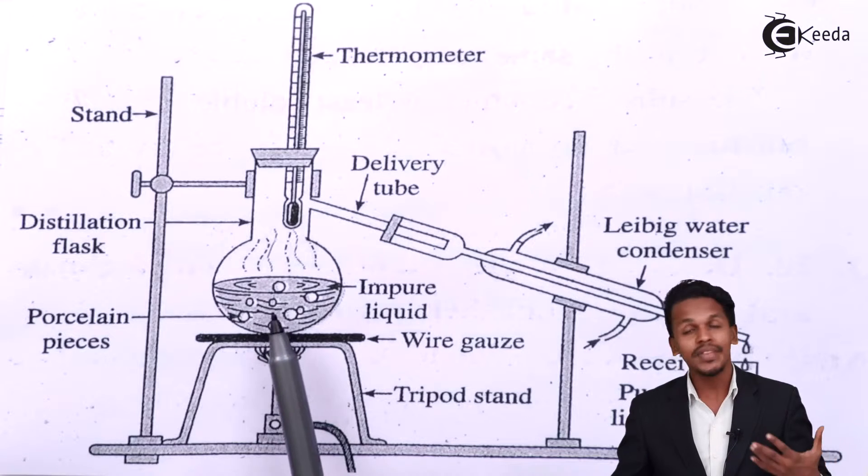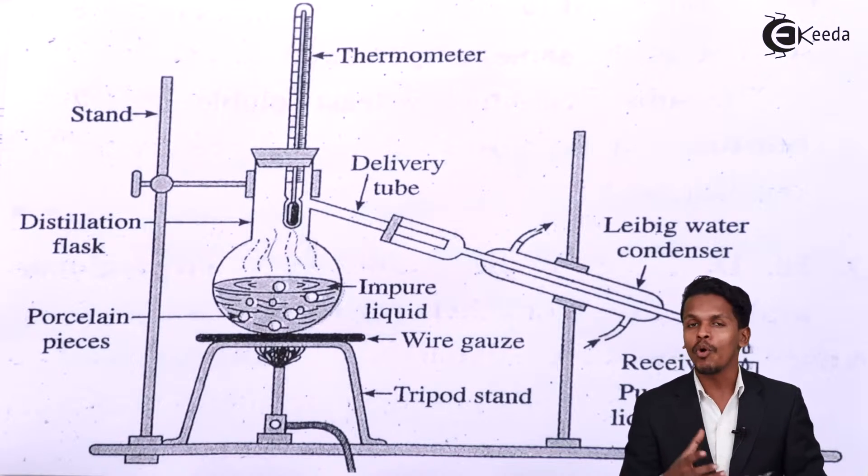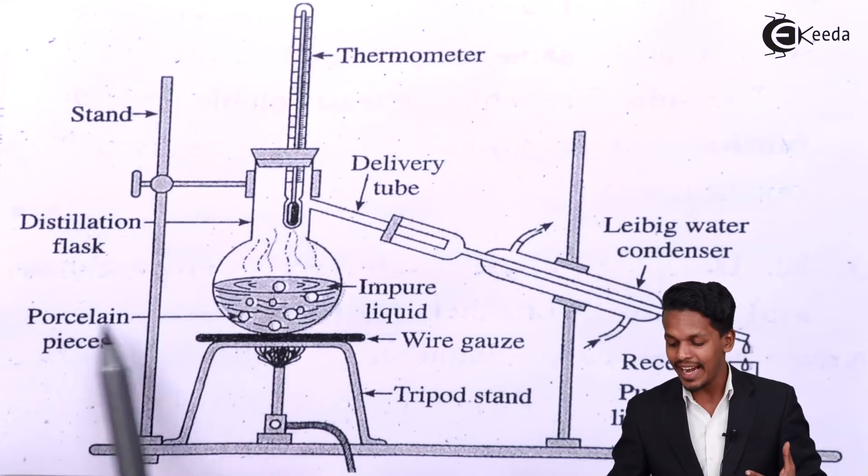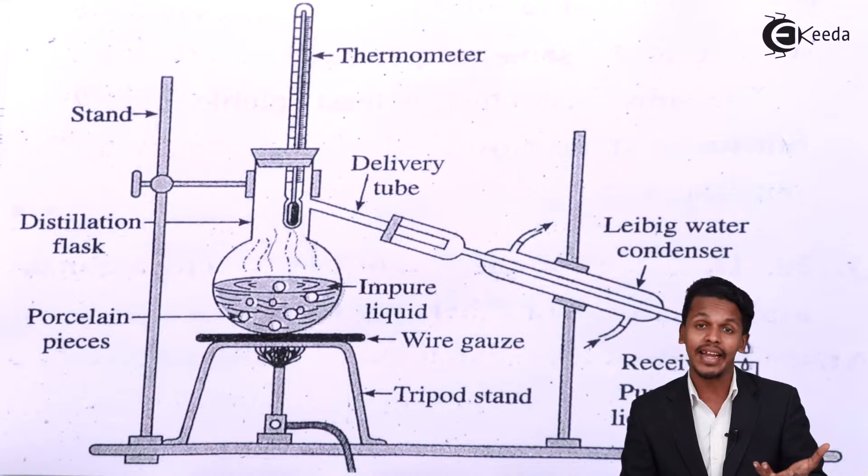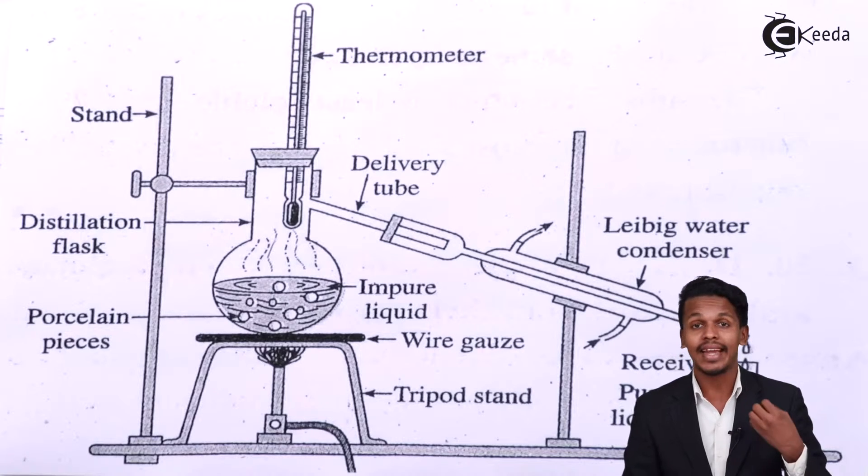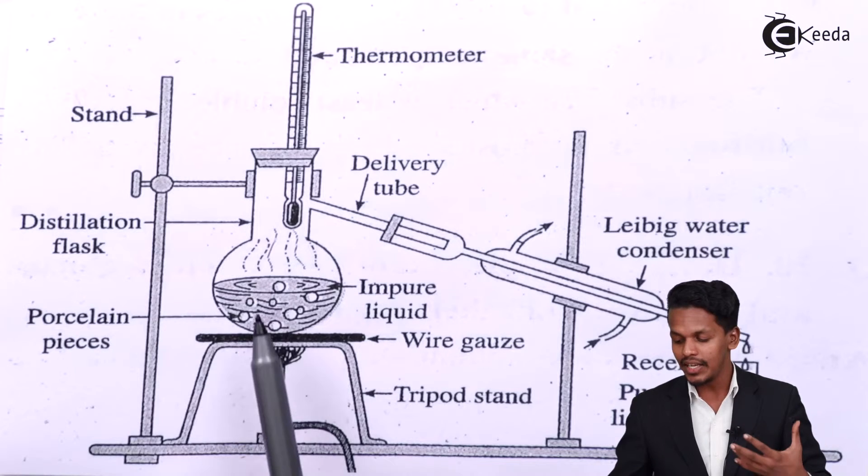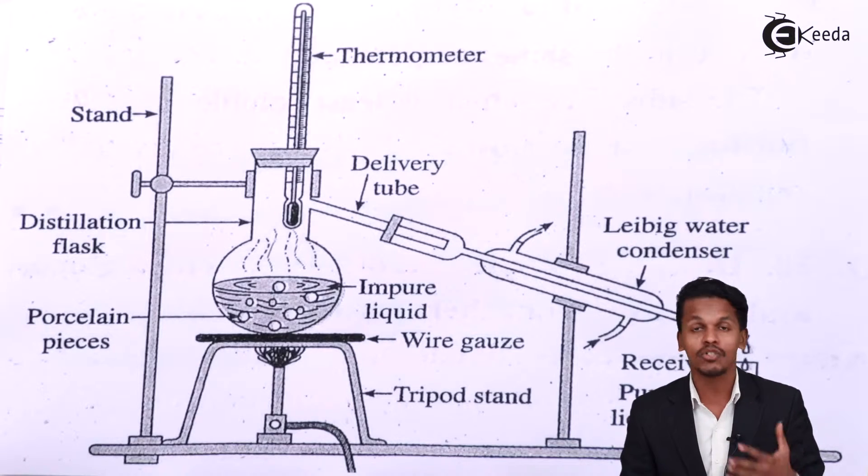This consists of the impure liquid but during boiling what happens is the bumping starts. So that's the reason that we can add porcelain piece in it. After adding porcelain piece we could find that after heating also or at a high temperature also the bumping doesn't happen. So in this case basically if we heat it, this could be volatile also or this could be non-volatile also.